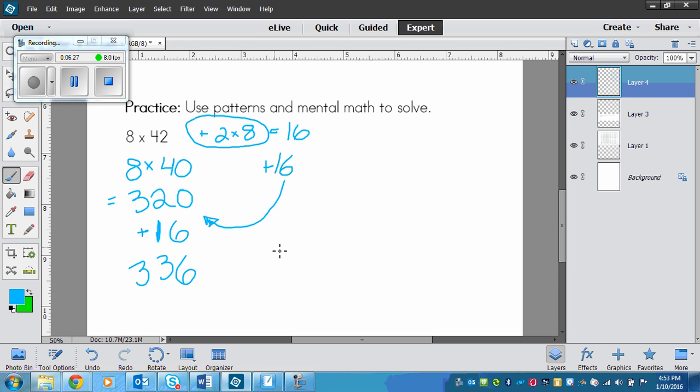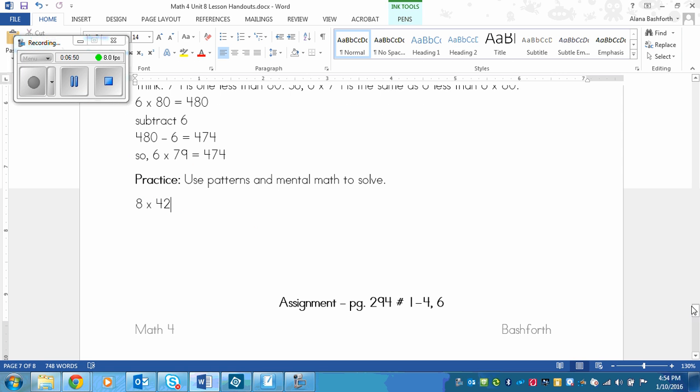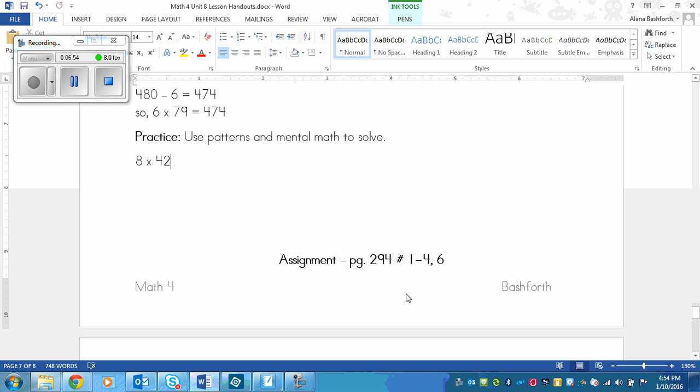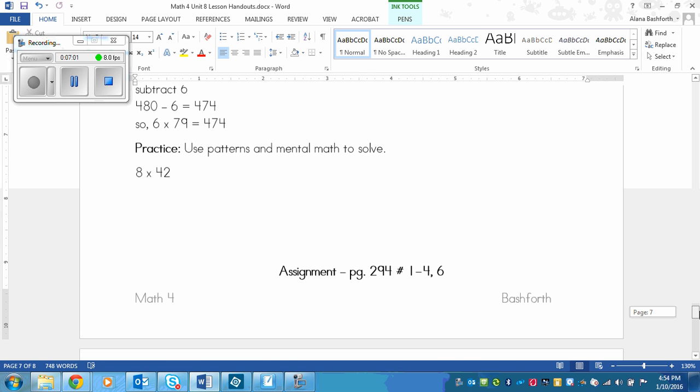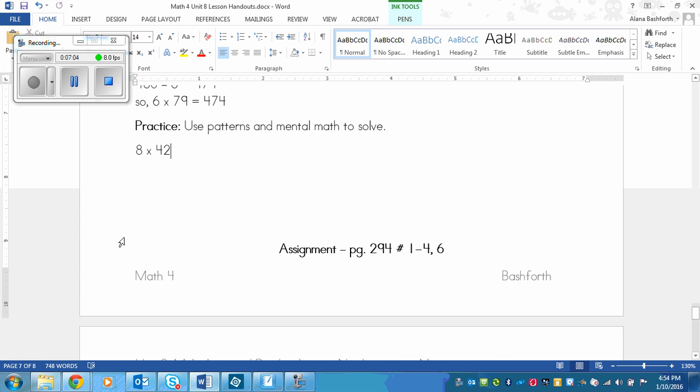So that's what you're practicing in this assignment. Don't forget that if you are making this number go down, then you need to add later. If you're making this number go up, then you need to subtract after. Think about it logically. Your assignment is on page 294, and it is numbers 1 to 4 and 6.